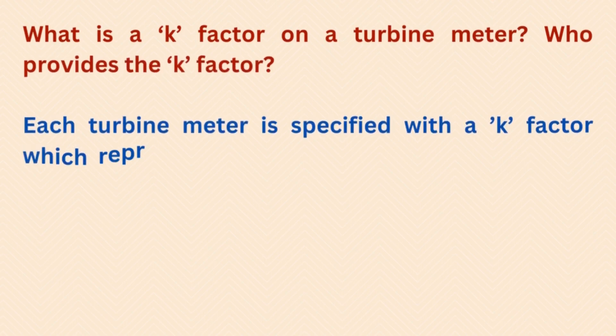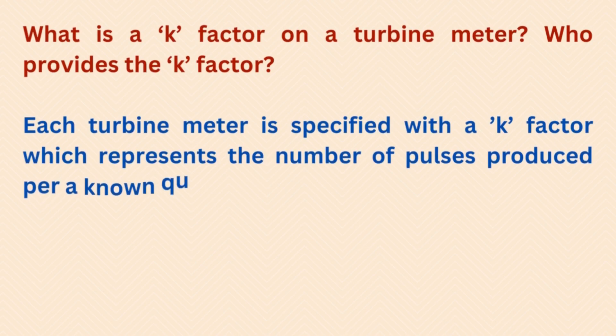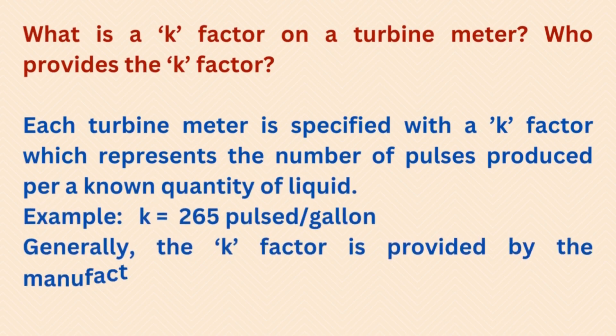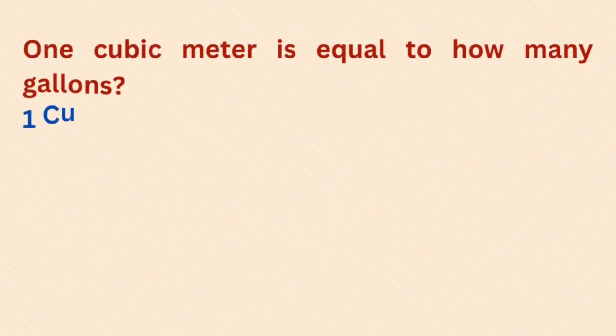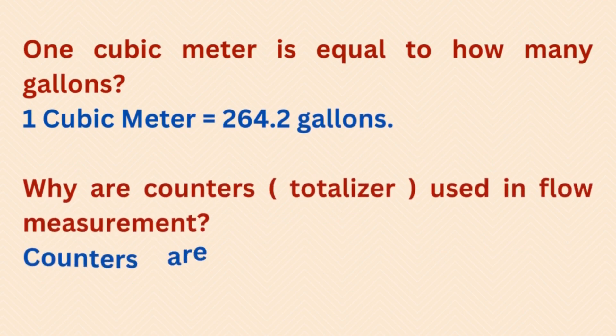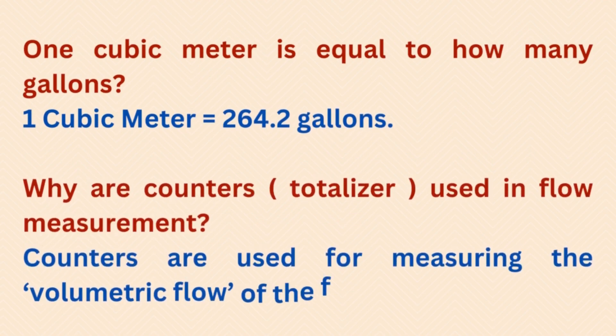What is a K factor on a turbine meter and who provides it? Each turbine meter is specified with a K factor which represents the number of pulses produced per unit quantity of liquid. For example, K = 265 pulses/gallon. Generally the K factor is provided by the manufacturer. One cubic meter is equal to 264.2 gallons.